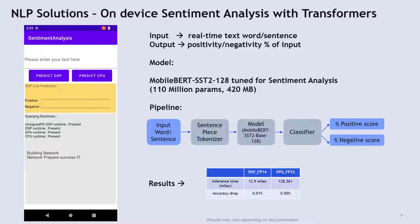The second NLP solution is On-Device Sentiment Analysis with Transformers. In this solution, as and when the user enters the input text in real-time, the sentiment of the input text is calculated and is shown on the screen. The model used for this solution is MobileBERT SSD2, which is tuned for sentiment analysis. The pipeline followed and the performance results are shown on the screen. Like the previous solution, even in this solution, we could see a great improvement in runtime when the model is run on CPU versus when the model is run on DSP.